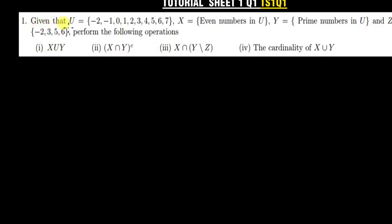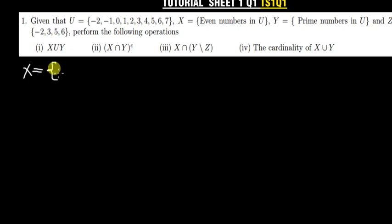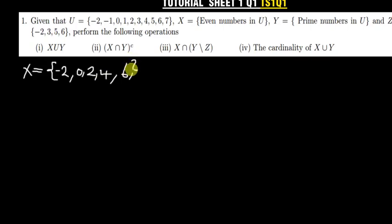So the question says: given that U is equal to {−2, −1, 0, 1, 2, 3, 4, 5, 6}, and X is equal to the set of even numbers in U. So we list all the even numbers in U: we have −2, 0, 2, 4, and 6. These are the even numbers in the universal set.